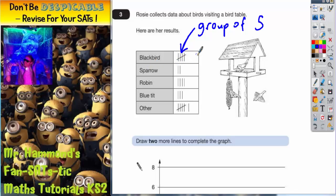So for blackbird, this is a group of five. Sparrow is just two. Robin is four. Blue tit is three. And other, well we've got a group of five plus an extra one. So that's six.